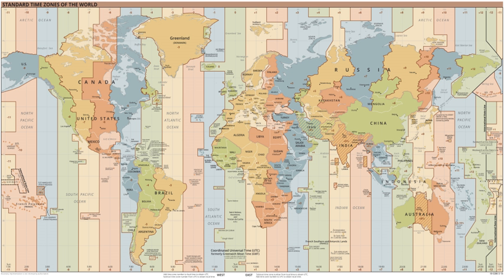In 1908, the Korean Empire adopted a standard time that was 8.5 hours ahead of UTC. In 1912, during the Japanese occupation of Korea, the Governor General of Korea changed standard time to UTC+9 to align with Japan's standard time. However, in 1954, the South Korean government under President Syngman Rhee reverted the standard time to UTC+8:30.